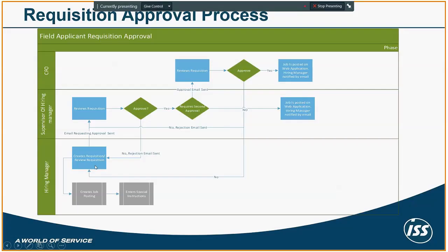This is the workflow we've created in JD Edwards. When a requisition is created in the system, it is routed to the hiring manager of the person who is creating the requisition. If it is a non-budgeted position, the requisition is first approved by the hiring manager and then also approved by the CFO. You don't really need to log into JD Edwards to approve a requisition. You get an email with an approval link and you could click that link from a mobile device as well as from your computer.